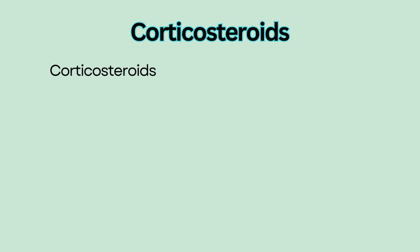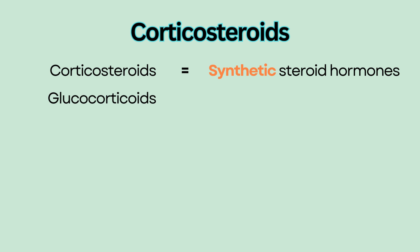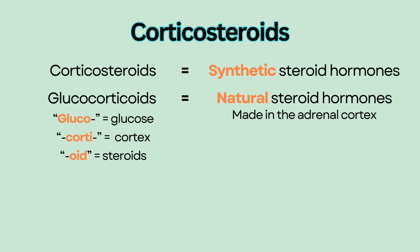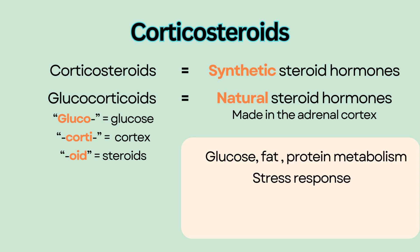Corticosteroids are synthetic steroid hormones made to mimic natural steroid hormones made by the adrenal cortex, which is part of the adrenal gland located on top of each kidney. The primary natural steroid hormone is glucocorticoid — gluco means glucose, corti means cortex, and coid means steroid. Together, glucocorticoid is a steroid hormone made in the adrenal cortex, involved in glucose metabolism, and also responsible for fat and protein metabolism.